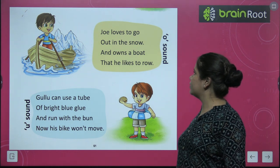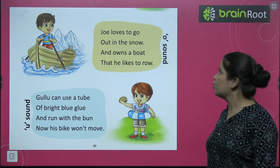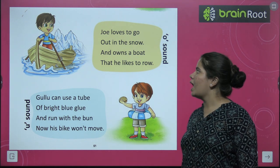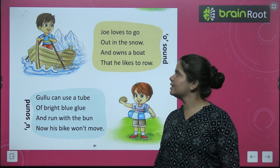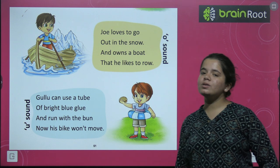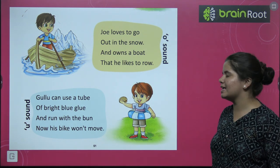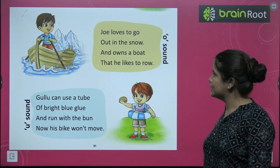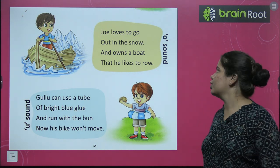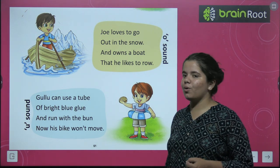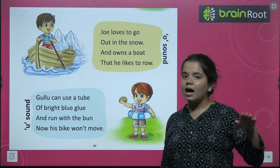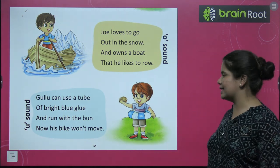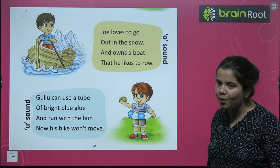Now we will read the poem of O-sound. Joe loves to go out in the snow and owns a boat that he likes to row. Let's say it together: Joe loves to go out in the snow and owns a boat that he likes to row.